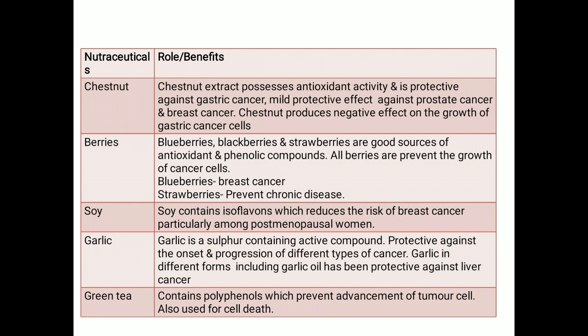Strawberries prevent chronic diseases and are used in different types of cancers. Soy contains isoflavones which reduce the risk of breast cancer, particularly among postmenopausal women. Garlic contains sulfur-bearing active compounds that are protective against the onset and progression of different types of cancer. Garlic oil in particular has been shown to be protective against liver cancer.